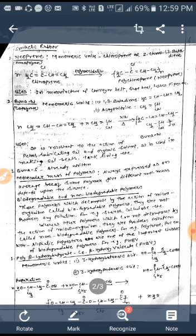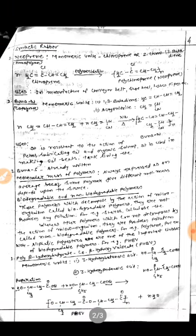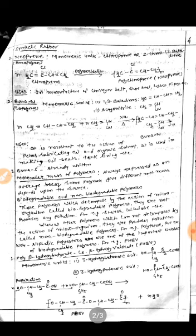For molecular mass of polymers, we generally use average molecular mass because different sources of the same polymer can have different molecular masses.